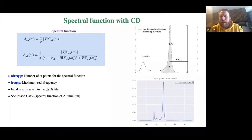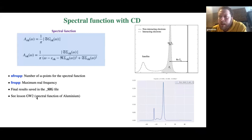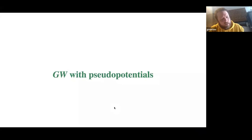The spectral function is defined in terms of the interacting Green's function, reformulated in terms of the self-energy. There are two variables governing its evaluation: the number of points for the spectral function and the maximum real frequency. Everything is analyzed in the second GW lesson, and there are post-processing tools to plot the spectral function from the NetCDF files.